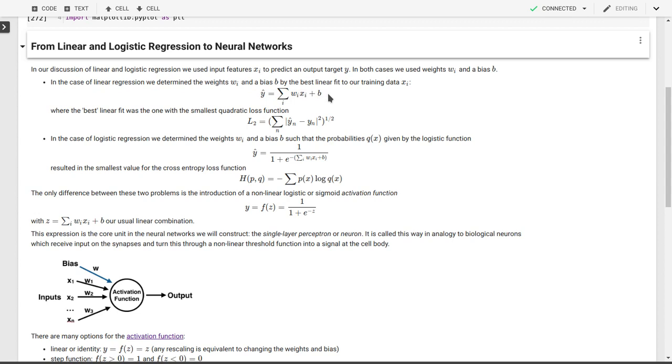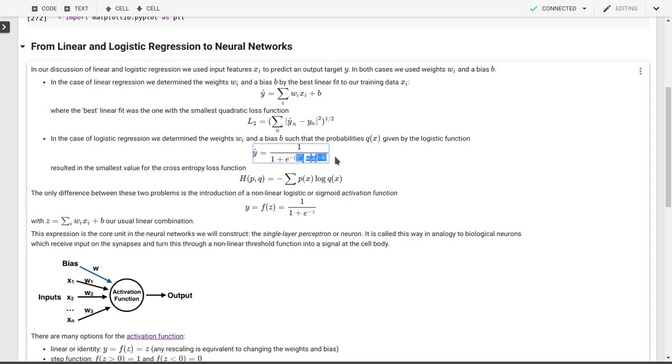In the case of logistic regression, we used the same weights and biases. But now we determined probabilities q, which were given then as our output target y hat. That was given by 1 over 1 plus e to the power minus the sum of the weights times our input features plus the bias. So the part that appears here in our exponential is exactly the same as what we get in linear regression. The only difference really between the expression for linear regression and the expression for logistic regression is this non-linear function, this logistic or also called sigmoid activation function.